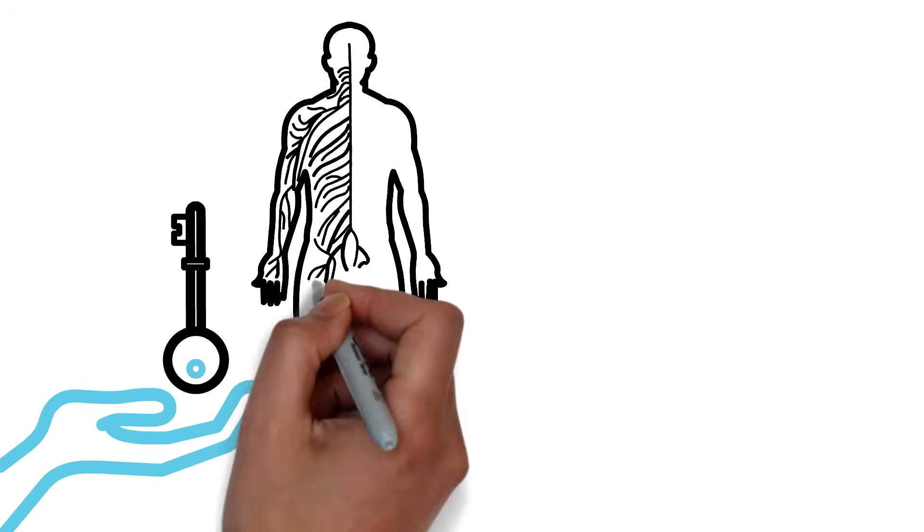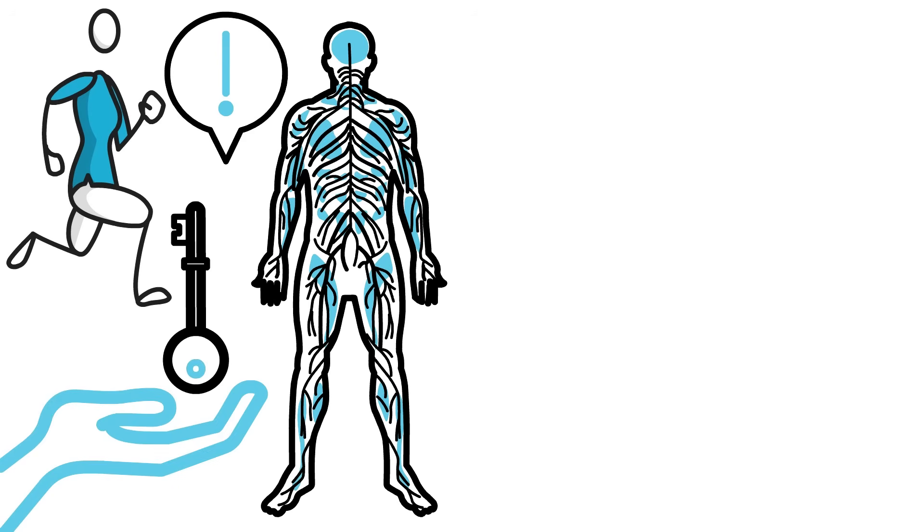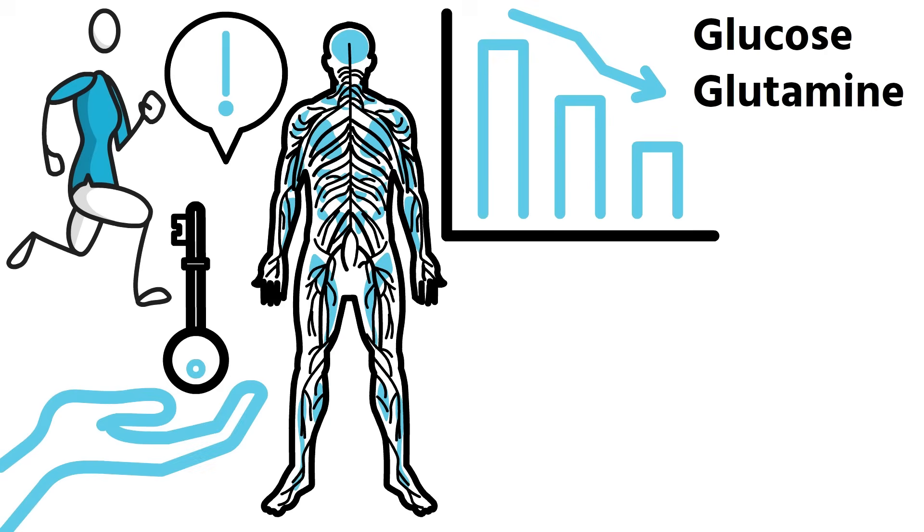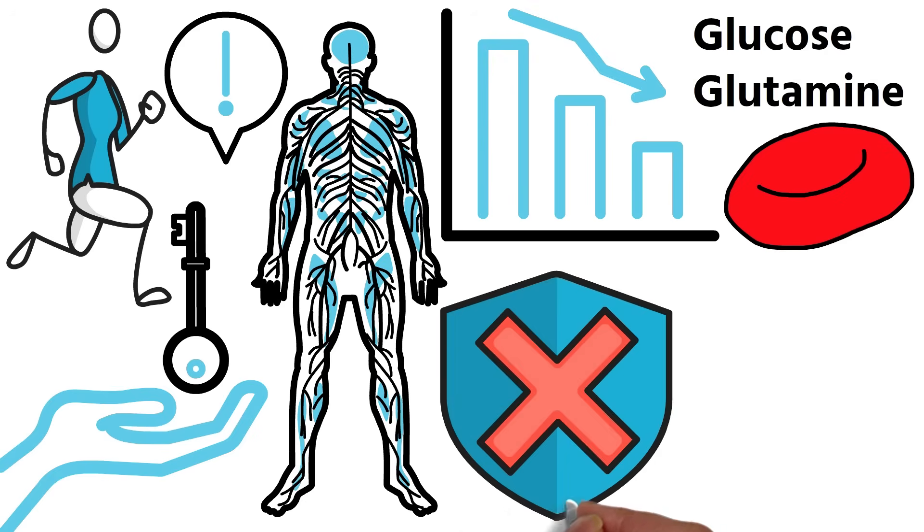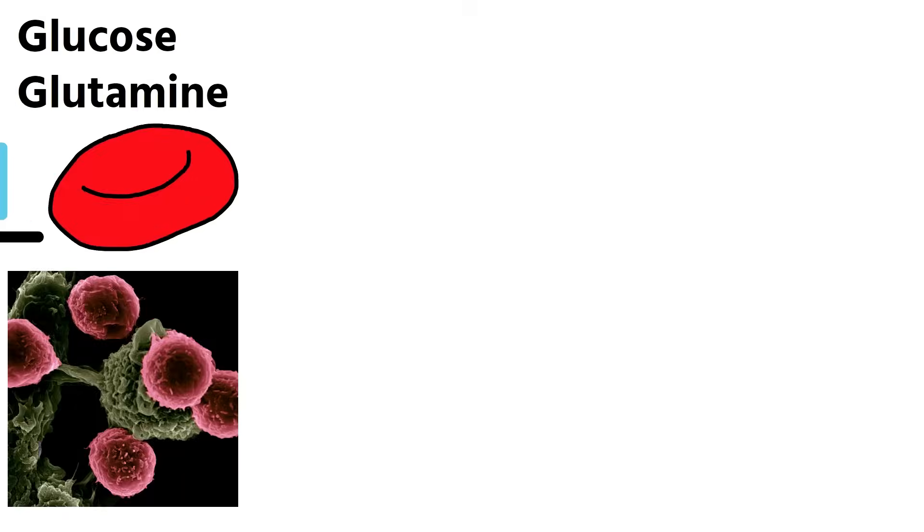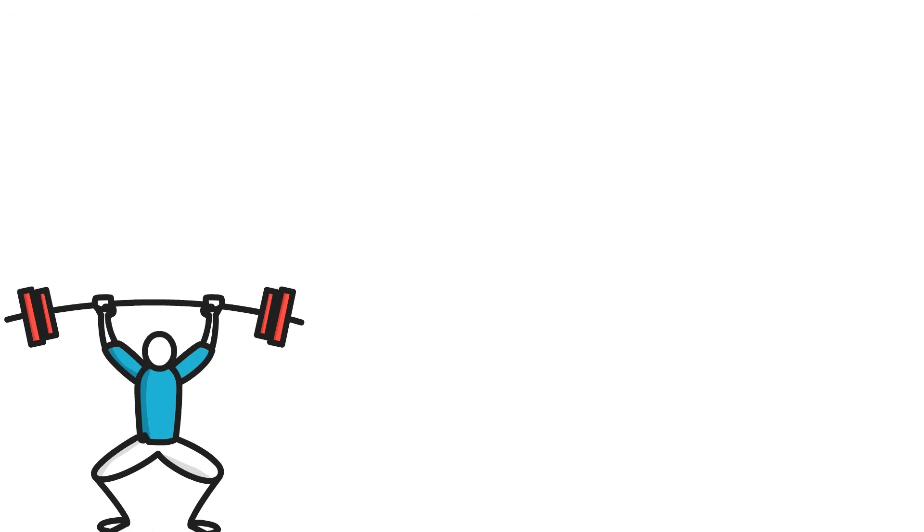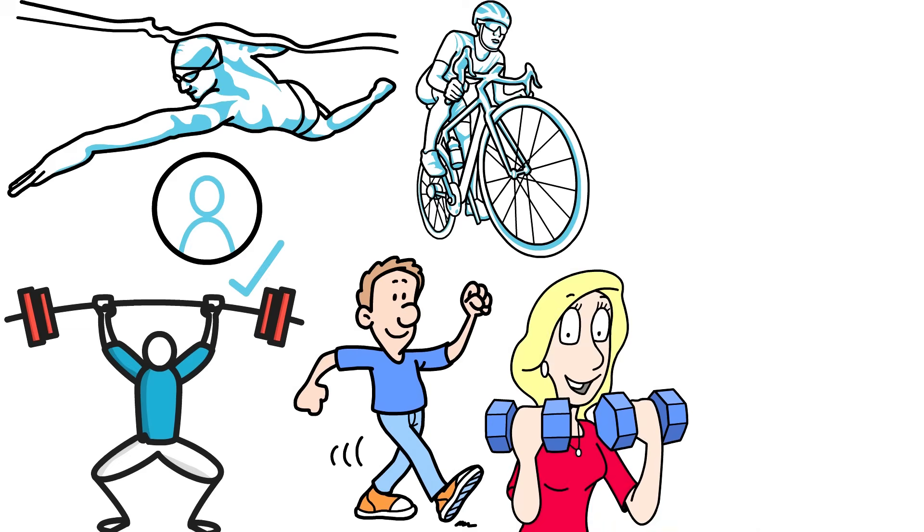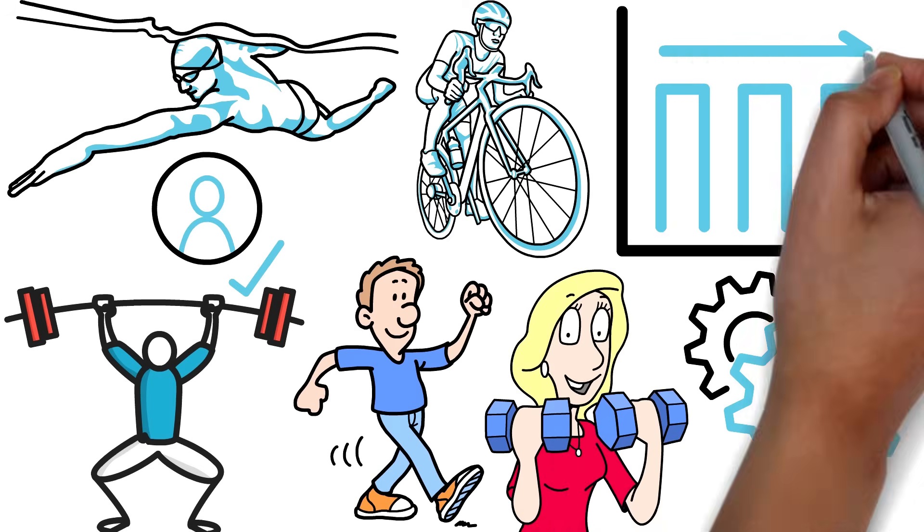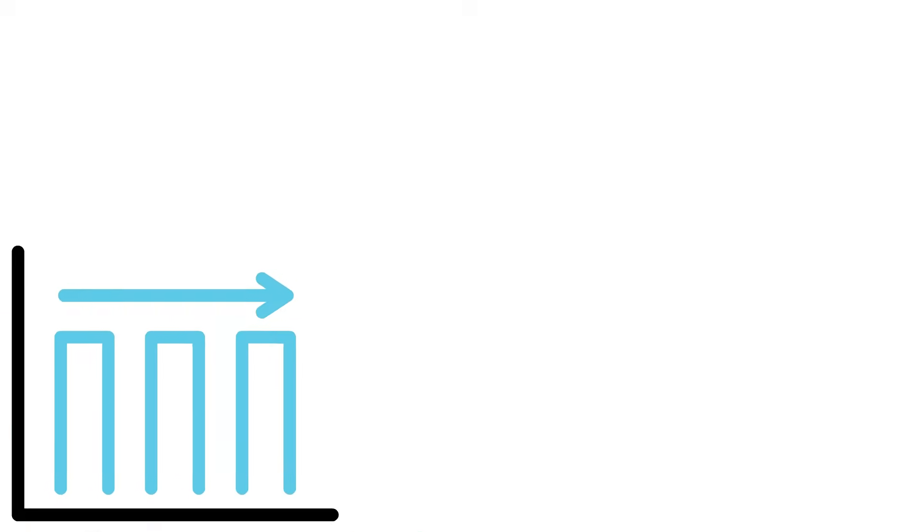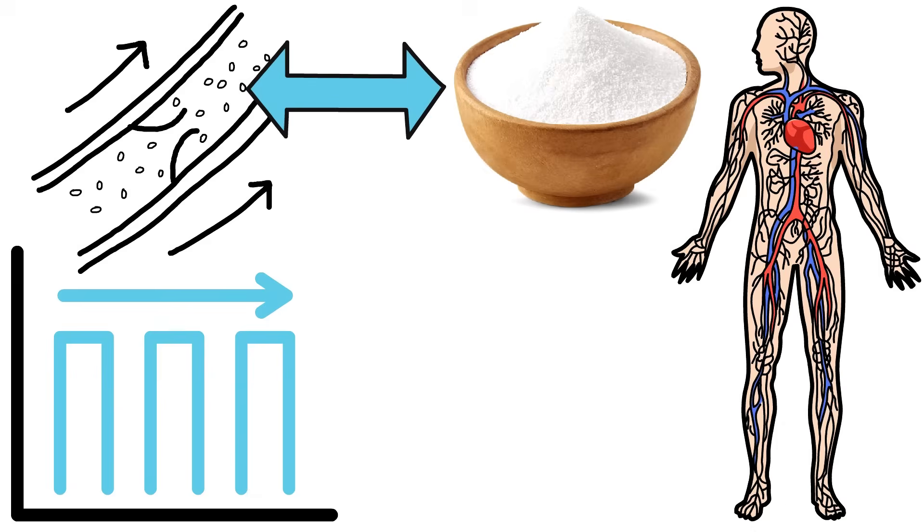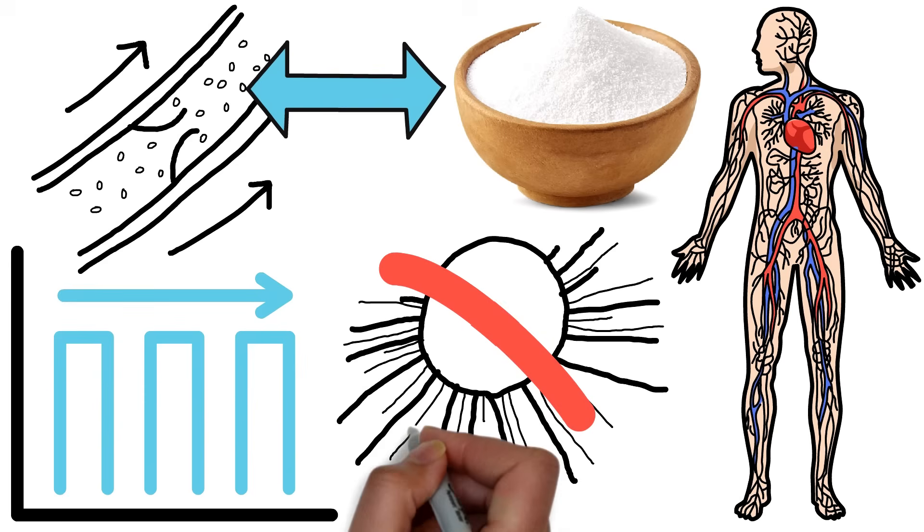The second key to protecting your body is movement. Physical activity isn't just beneficial, it's essential. It helps lower the levels of glucose and glutamine in your blood, cutting off the main fuel supply that tumor cells depend on. You don't need extreme workouts to see results. Brisk walking, swimming, cycling, or light strength training are all effective. What matters most is consistency. When your muscles move regularly, they draw excess sugar out of your bloodstream and create an internal environment that cancer cells simply can't thrive in.